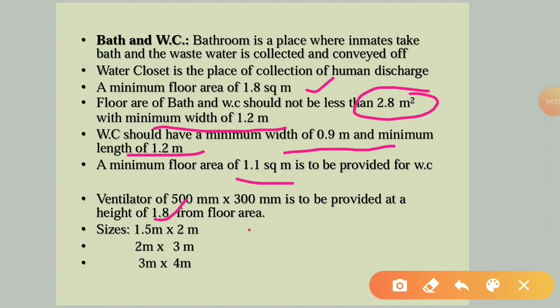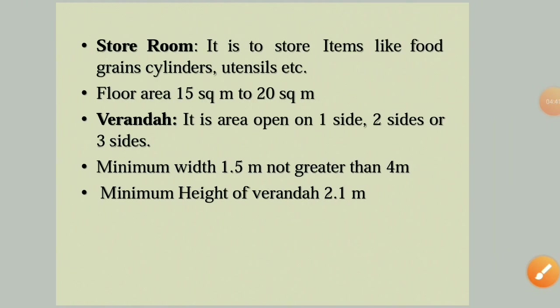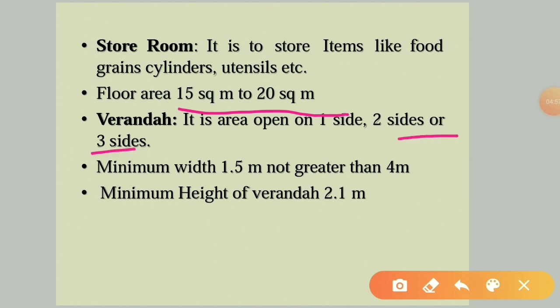Combined bathroom and water closet sizes are typically 1.5m×2m, 2m×3m, or 3m×4m. The store room is used to store food grains, cylinders, and other materials, with a floor area of 15 to 20 sq.m. The veranda is an area open on one or more sides with a minimum width of 1.5 meters, not greater than 4 meters, and minimum height of 2.1 meters.